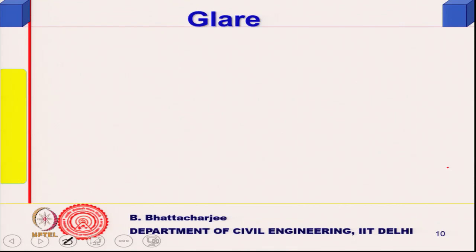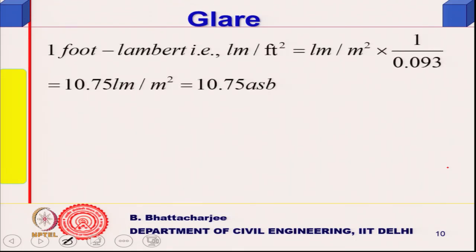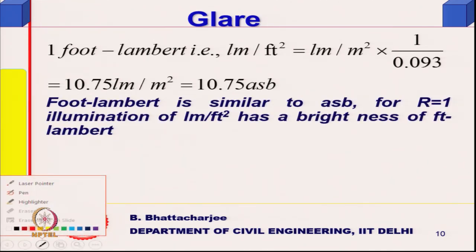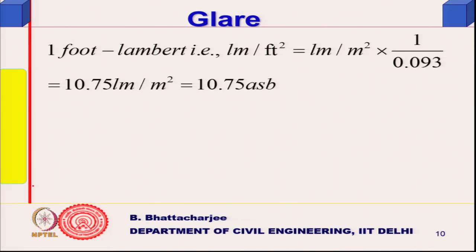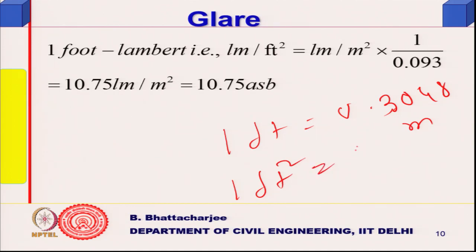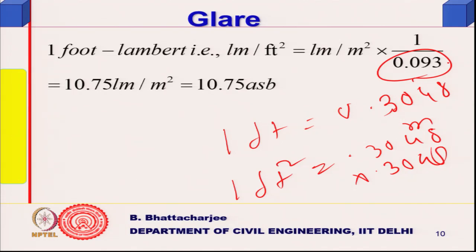We will look into glare further. This is the conversion from 1 foot Lambert to lumen per feet square. 1 foot equals 0.3048 meters, so 1 foot square equals 0.3048 × 0.3048, which gives us approximately 0.0093 square meters.